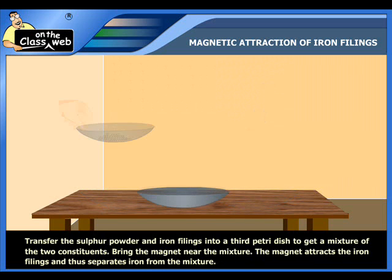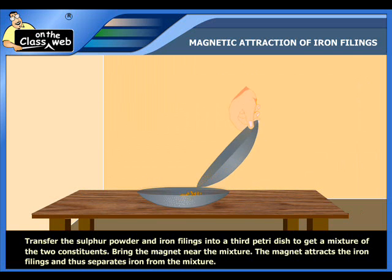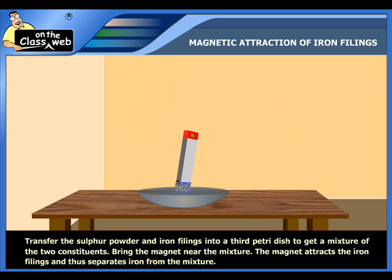Now, let's see the process involved in separating a mixture of sulfur and iron using the magnetic separation method. For this, transfer the iron filings and the sulfur powder into a third petri dish to get a mixture of the two constituents. Then, bring a magnet near the mixture. The magnet attracts the iron filings and thus separates iron from the mixture.